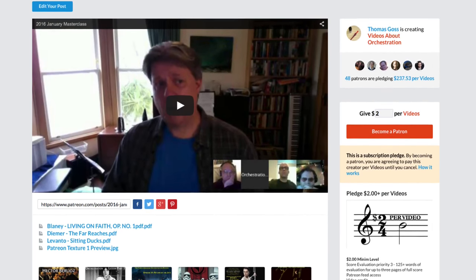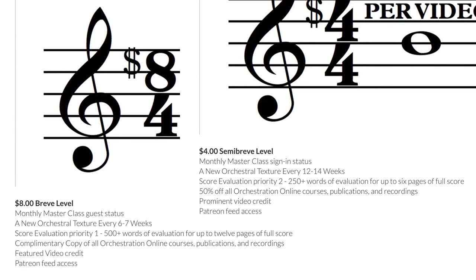I felt it was a very strong start to this series of composer hangouts. One of the premiums for Breve and Semi-Breve Patreon supporters is that I'll be posting a new texture every month or so, which will eventually be collected and expanded upon for the upcoming book '33 Orchestral Textures.' So at the end of last week's masterclass, I gave a short preview lecture on the first of these textures, titled 'Five Tutti Chords.' To keep the rest of the community connected with that project, I'm sharing the lecture here and adding some audio and score excerpts.